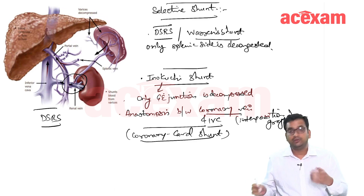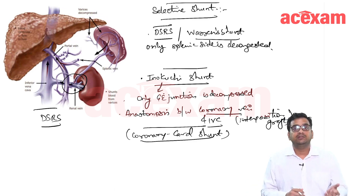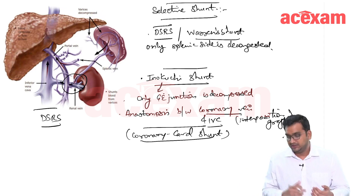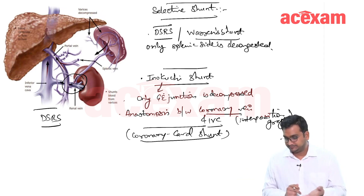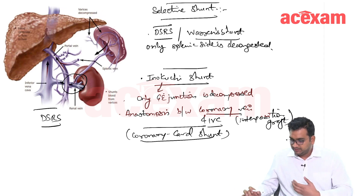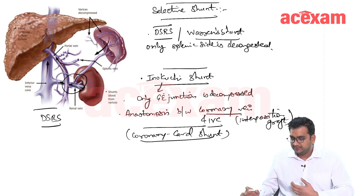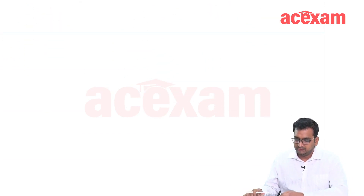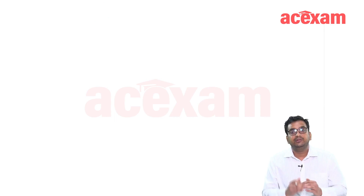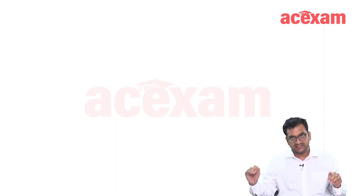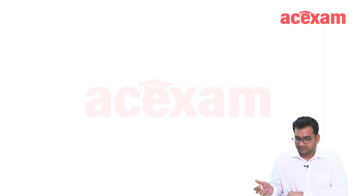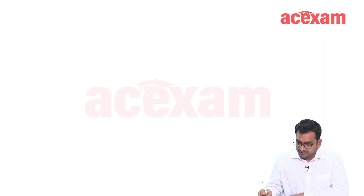Which among the following is a coronary caval shunt? It is the Inokuchi shunt. The coronary caval shunt is a selective shunt. The second selective shunt is DSRS or Warren's shunt. An important distinction: PSRS is a non-selective shunt, whereas DSRS is a selective shunt.